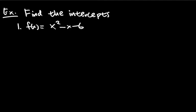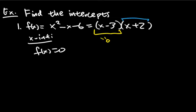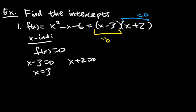Let's look at some examples. We have f(x) = x² − x − 6. For the x-intercept, that is where f(x) equals zero. The easiest way is to factor it. This factors to (x − 3)(x + 2). Each factor set to zero gives us x = 3 and x = −2. But these are not just the x-values — the x-intercepts as coordinates are (3, 0) and (−2, 0).